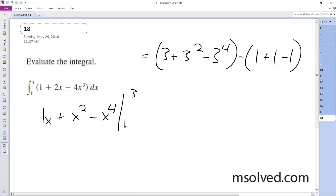We end up with 9 minus 81. So 9 plus 3, which is 12.